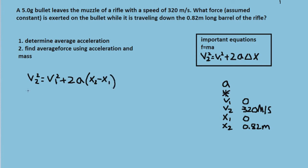So basically, we're going to have 320 squared is equal to 0 plus 2a times 0.82 minus 0.